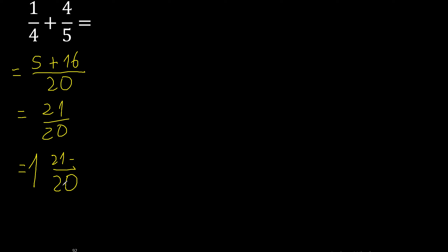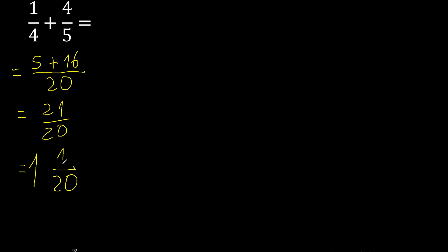Minus: 20 multiplied by 1 is 20. 21 minus 20 is 1. Ok, we'll be right back.